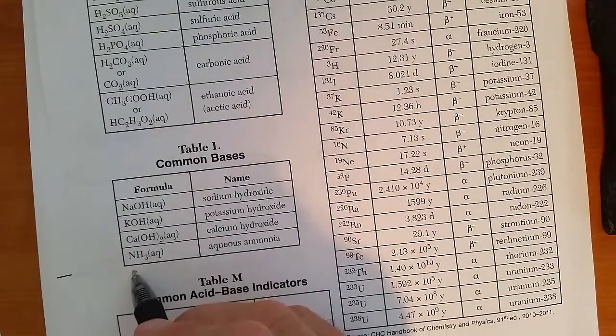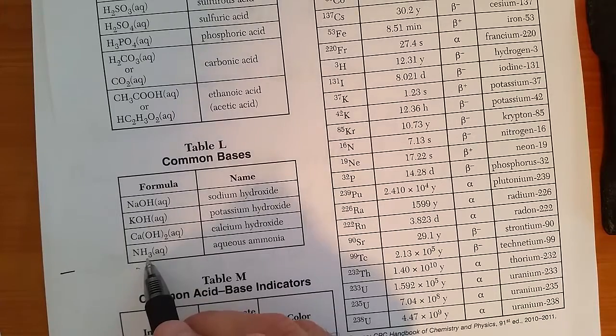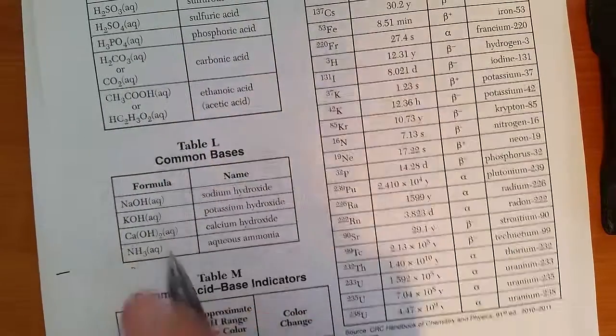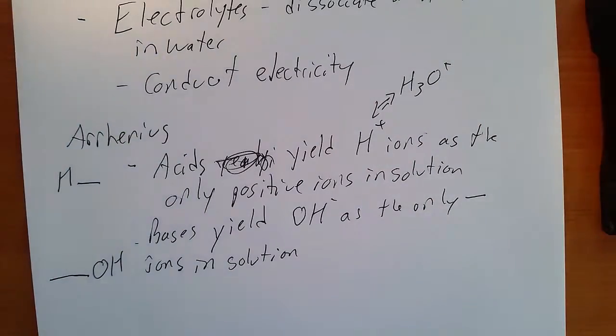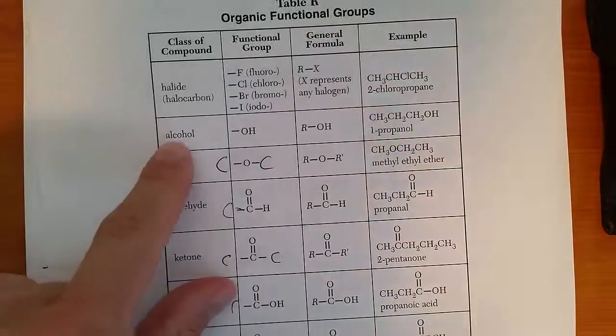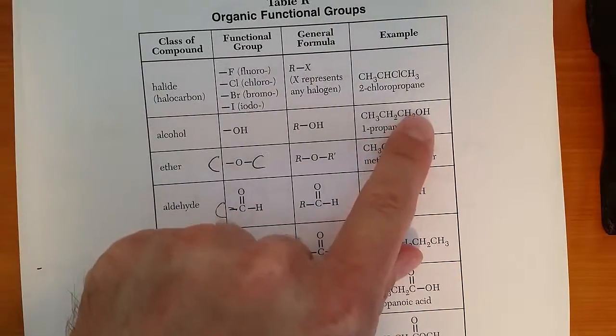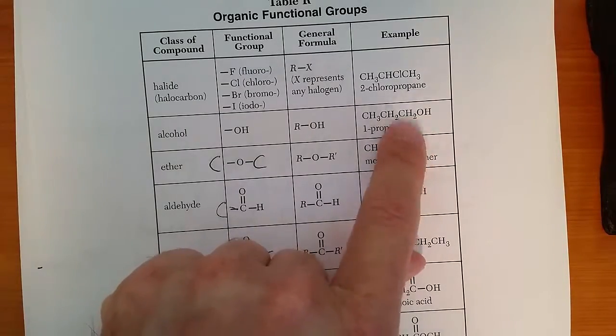Ammonia is a little bit different, but that is also a base, NH3. And then don't make the mistake. Remember, organic alcohols end in OH, but they are alcohols, not bases.